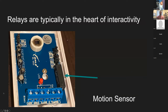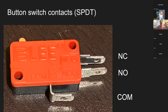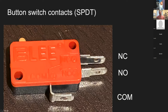Motion sensors work the same way — a relay with normally open and normally closed, called alarm and tamper, used in home security systems. Buttons all have these SPDT switches: by default the common terminal is connected to the normally closed contact, and when the button is actuated it physically changes from normally closed to normally open, connecting common to normally open instead.